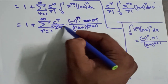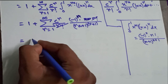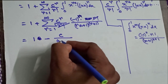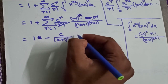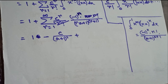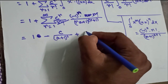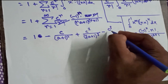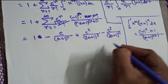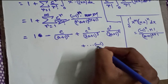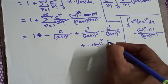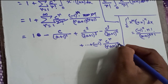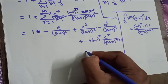After the factorials cancel and we expand the series, it becomes: 1 + (−1)·c/(a+1)² + c²/(2·(a+1)³) − c³/(3·(a+1)⁴) + ... plus the general term (−1)^r · c^r / (ra+1)^(r+1) + ...